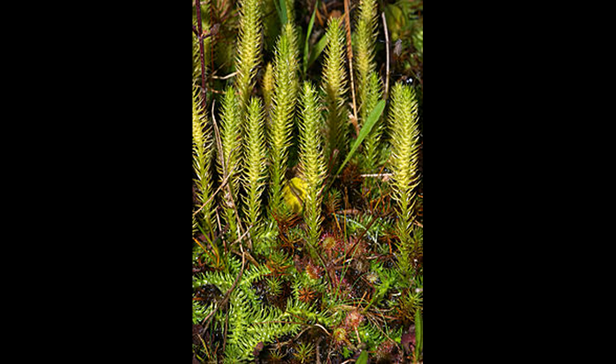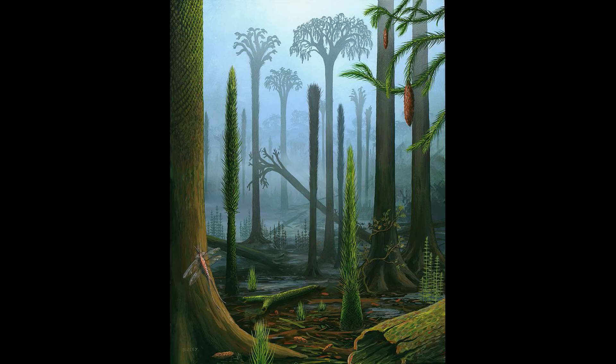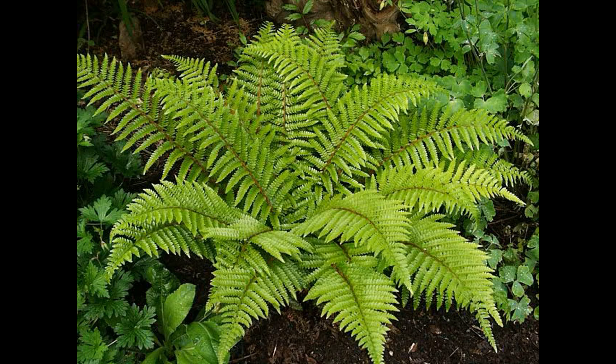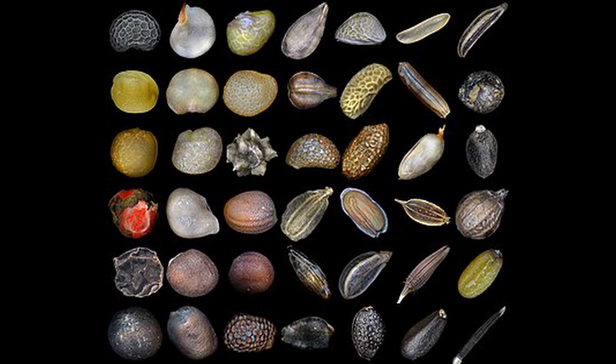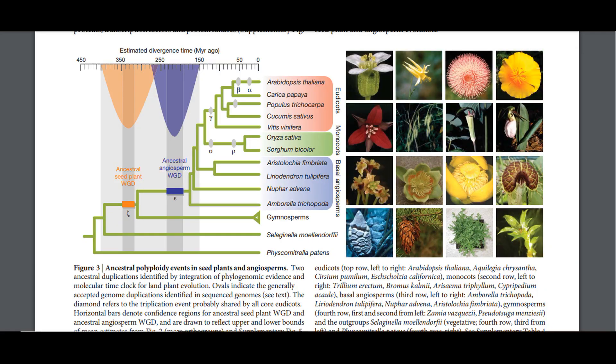Basal lineages of vascular plants include the lycopods, such as quillworts, club mosses, and the extinct giant lycopod trees from the Carboniferous. Another basal lineage is the monilophytes — the horsetails and ferns that first appeared in the Devonian. The derived lineage of vascular plants is the clade Spermatophyta, the seed plants. Unlike ferns that reproduce via spores produced on the underside of fronds, Spermatophyta reproduce via the production of seeds. This clade first appeared in the Devonian in forms such as Pteridospermatophyta, and bifurcates into modern gymnosperms and angiosperms.